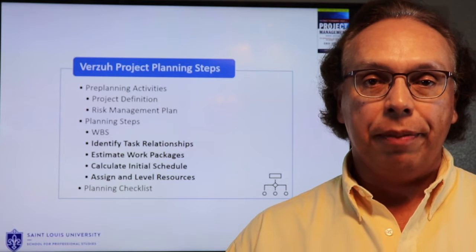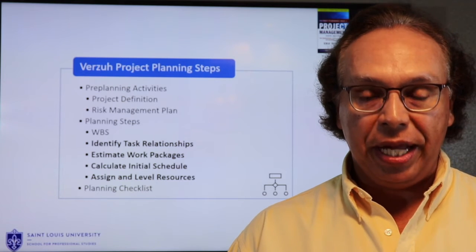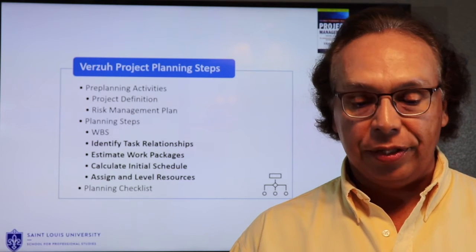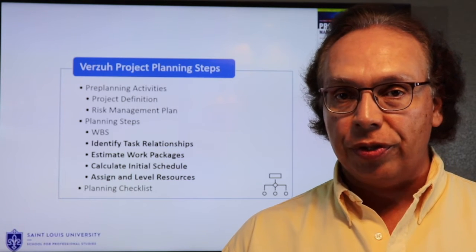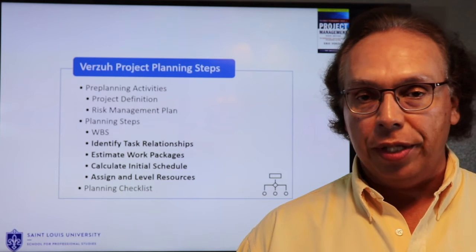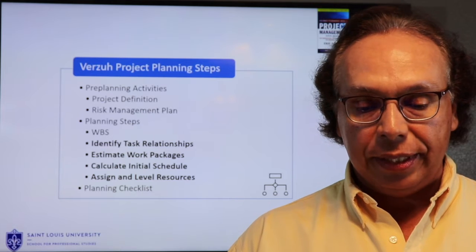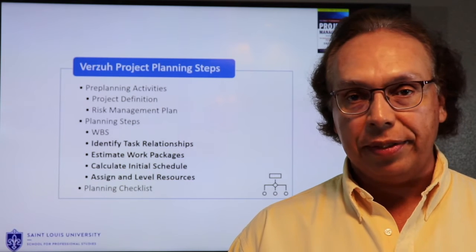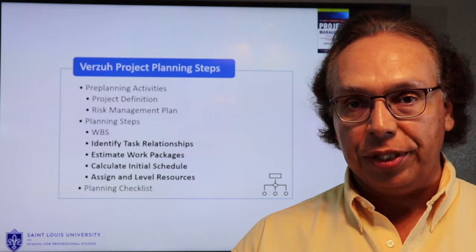Verzu has prepared planning steps that you can use for your projects. Pre-planning activities on page 189 include the project definition that we did in week two with the business case, the stakeholder register, and the assumption log. In week three, we worked on the risk management plan, including the risk register and the RAID log. The planning steps on page 190 include number one, the work breakdown structure, which we just completed in week four. If your WBS is task-oriented, you can move to the next step. If your WBS is only deliverable-oriented, you'll need to define the activities and tasks before moving on.